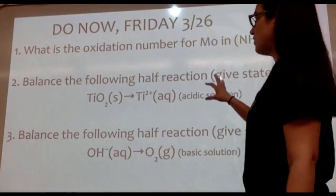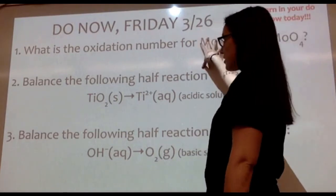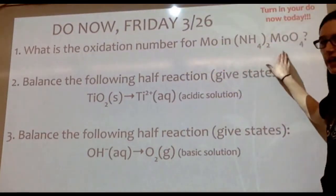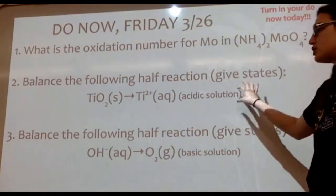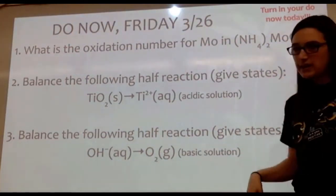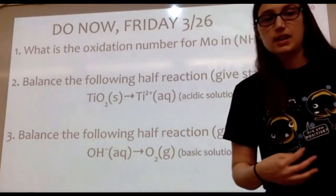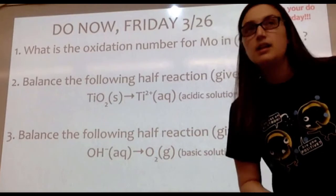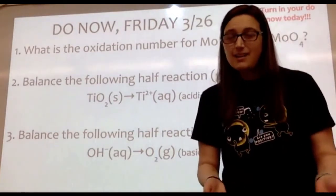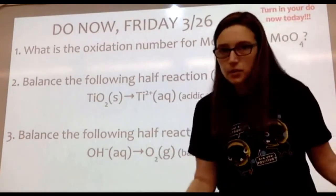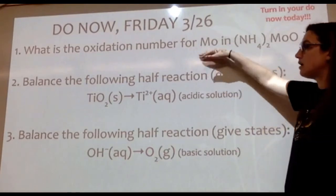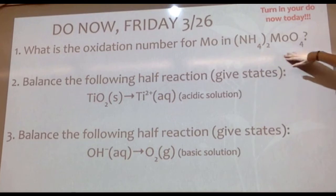For the do now, you're assigning oxidation numbers. Number one has you practice assigning oxidation numbers for a complex chemical formula, and then two and three are balancing half reactions. Include states of matter if Mastering says to include phases; if it doesn't specify, you don't have to worry about it. For number one, what's the oxidation number for molybdenum (Mo) in this chemical formula?